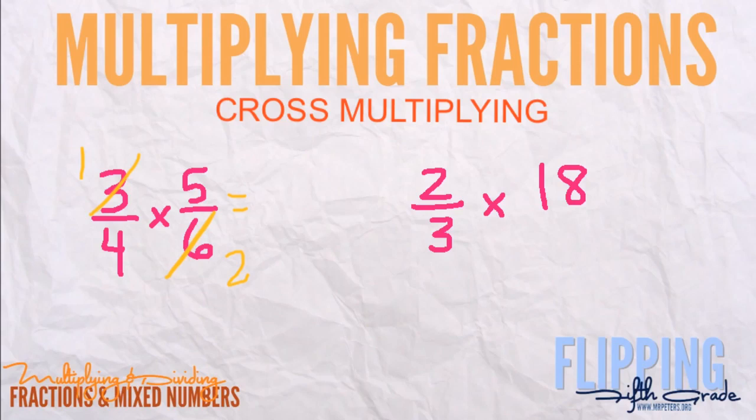Now we do one times five. We just multiply across and multiply the bottom. So one times five is five, and four times two is eight. What this helps with is we don't have to simplify as much. Let's look at the next problem.